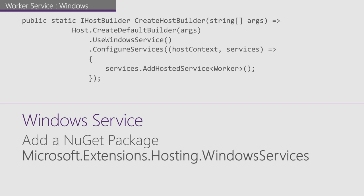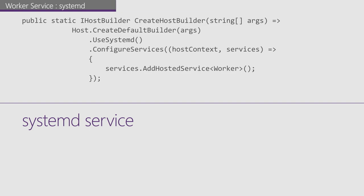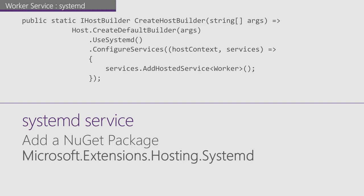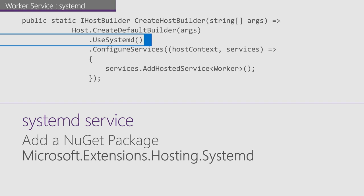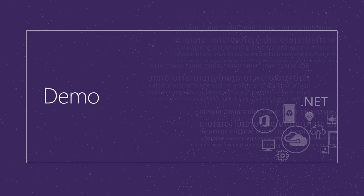To run this as a Windows service, just add the hosting Windows service NuGet package and call UseWindowsService(). Similarly, for a systemd service on Linux, add the Microsoft.Extensions.Hosting.Systemd NuGet package and call UseSystemd(). All other .NET Core features — dependency injection and the full middleware pipeline — are available here too.